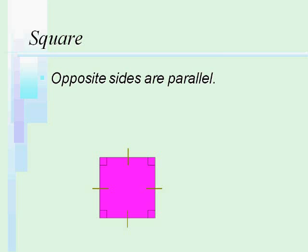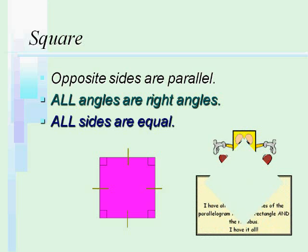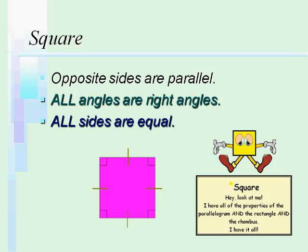Square has again opposite sides are parallel. All angles are right angles. And all sides are equal. So that means that not only does it have all the same properties or features of a parallelogram, it also has all the same properties of the rectangle and the rhombus. So that means square can also be called a rhombus, or rectangle, or parallelogram.